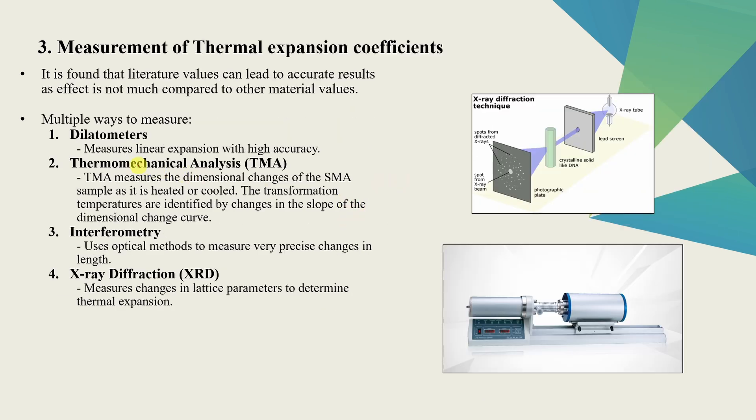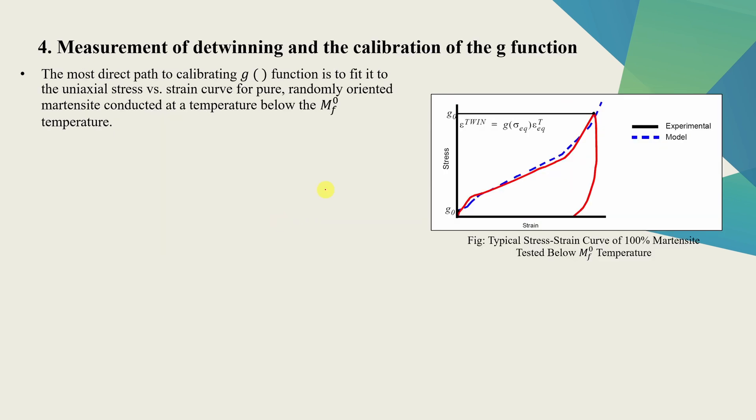The next is measurement of thermal expansion coefficients. Again, there are different techniques such as dilatometers or X-ray diffraction using which we can obtain those. And finally, the calibration of G function. For this, we will need uniaxial stress-strain curve for pure randomly oriented martensite. And we have to conduct that experiment at temperature which is below martensite finish temperature. Hence during the entire test, material will be always 100% martensite which will make strain due to transformation 0. Hence epsilon trip will be 0 and we will be left with this equation. Then we have to curve fit this equation onto the experimental results which will give us the G function.